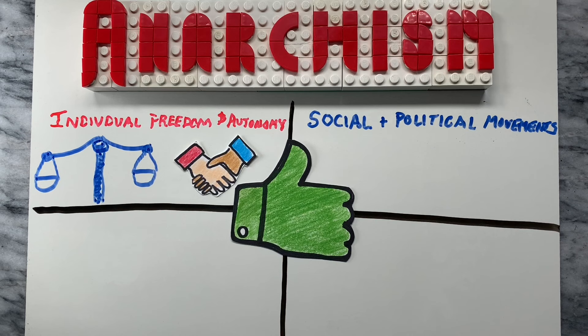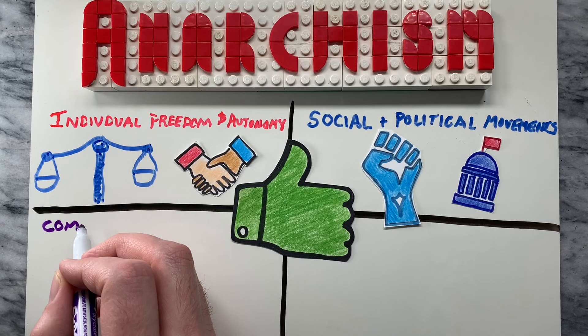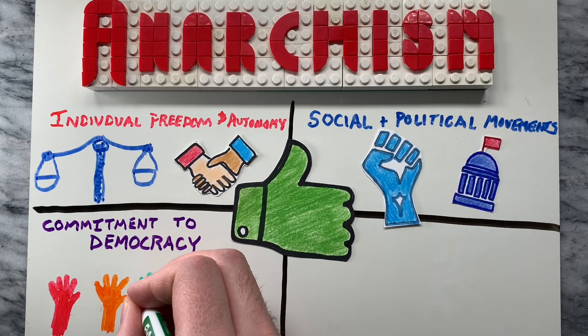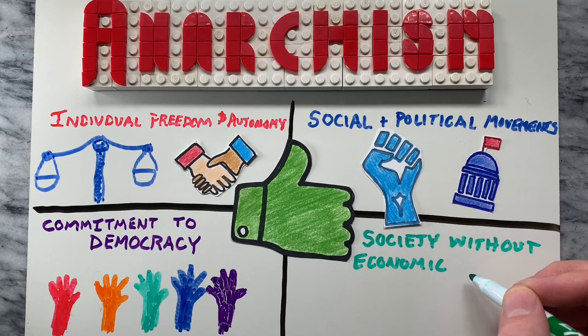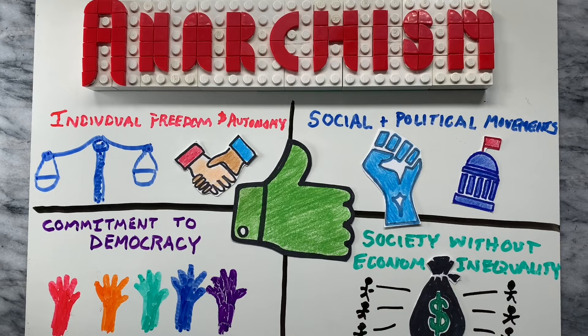Supporters point out that anarchism is often associated with a strong commitment to direct democracy and grassroots participation in decision-making. Lastly, those who support some forms of anarchism, such as anarcho-communism, envision a society without economic inequality where resources are shared and the needs of all members of society are met.